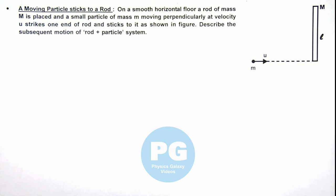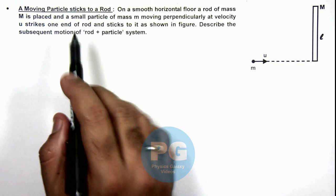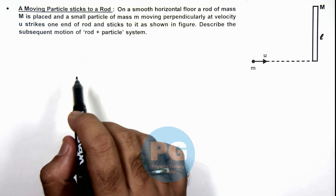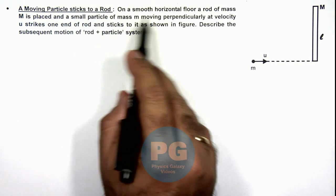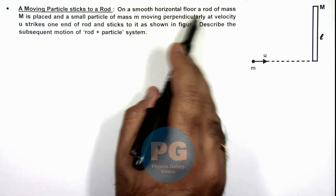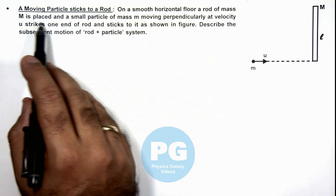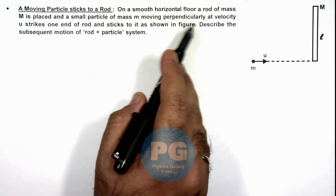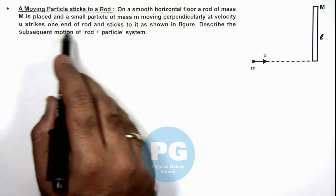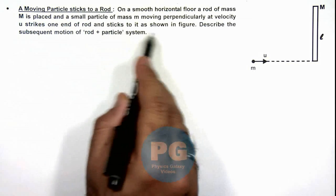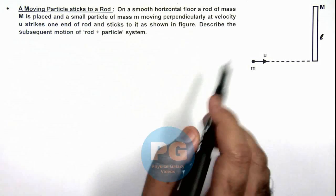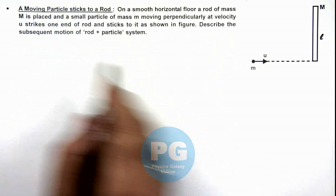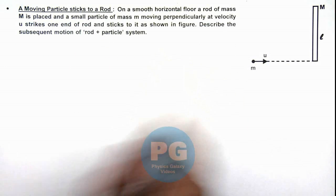In this illustration we'll discuss a moving particle which sticks to a rod. Here we are given that on a smooth horizontal floor, a rod of mass M is placed and a small particle of mass m moving perpendicularly at velocity u strikes one end of rod and sticks to it as shown in figure. We are required to describe the subsequent motion of rod plus particle system.